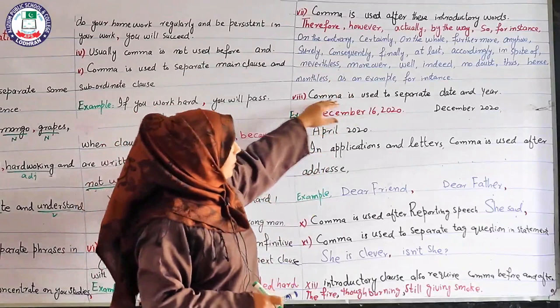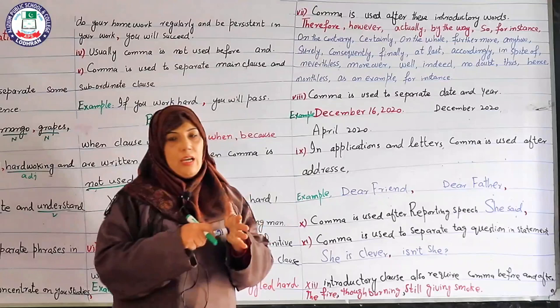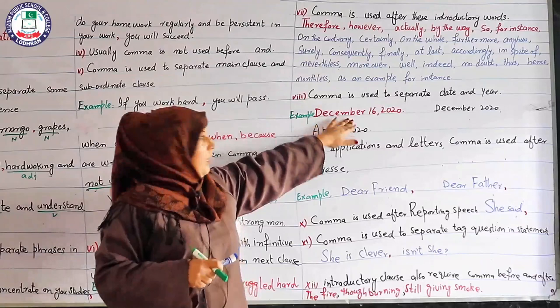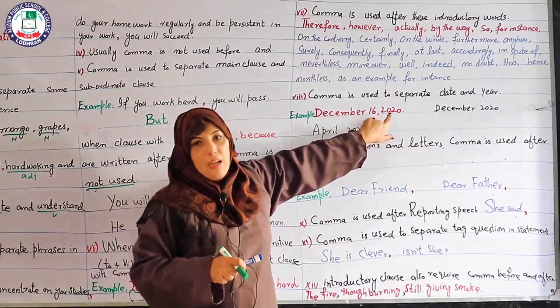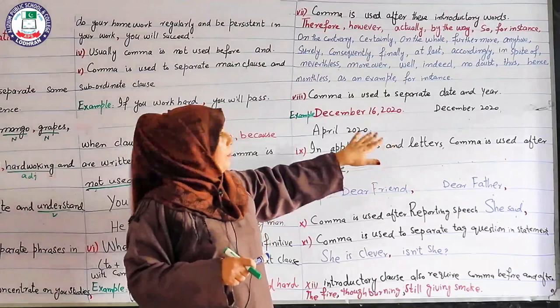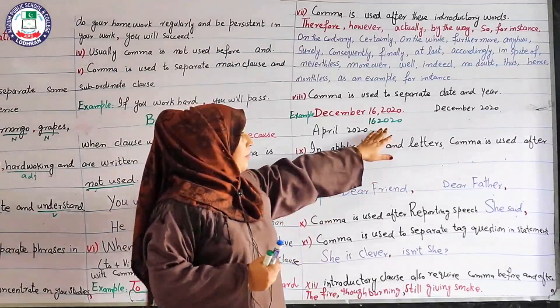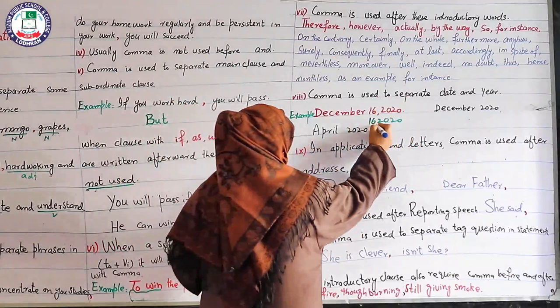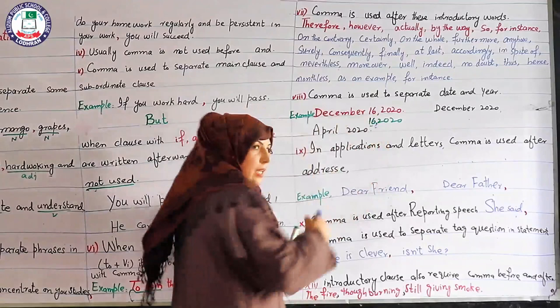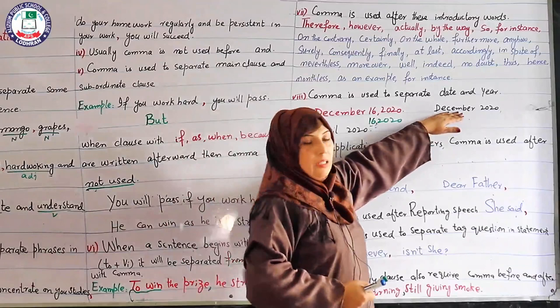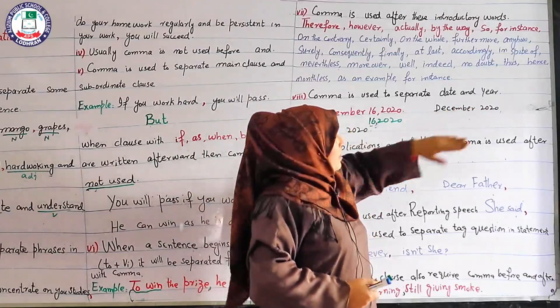Next rule: comma is used to separate date and year. When you mention a date, you need to know how to separate it. For example: 'December 16, 2020.' You do not put a comma after the month; instead, comma goes between the date and the year — i.e., between 16 and 2020. If only month and year are written (e.g., December 2020), no comma is needed between them since 'December' is in spelling and '2020' is in digits.